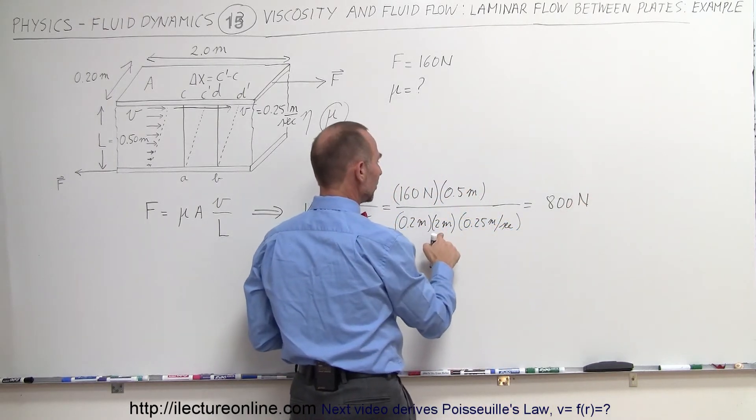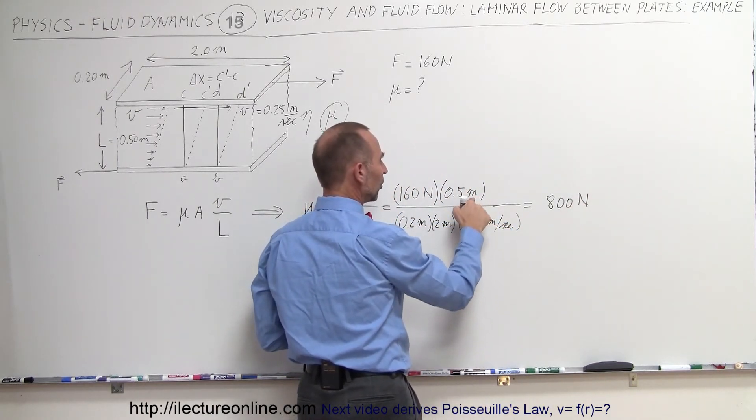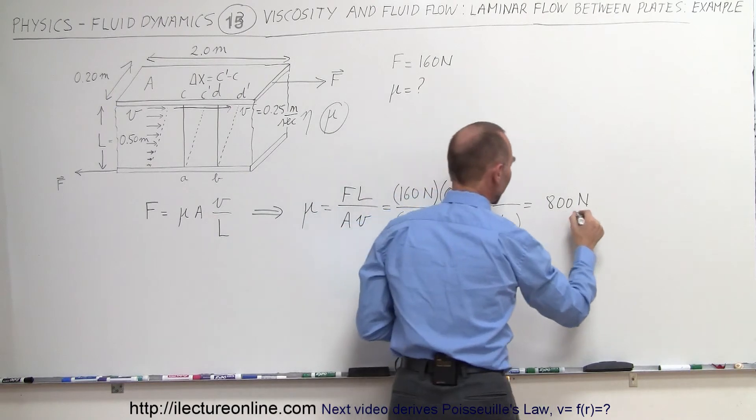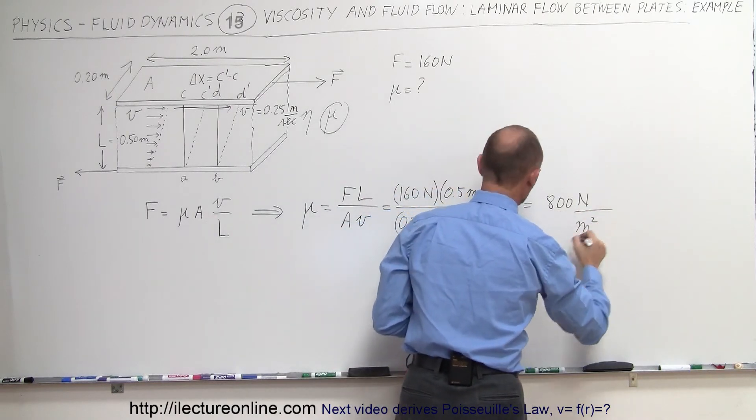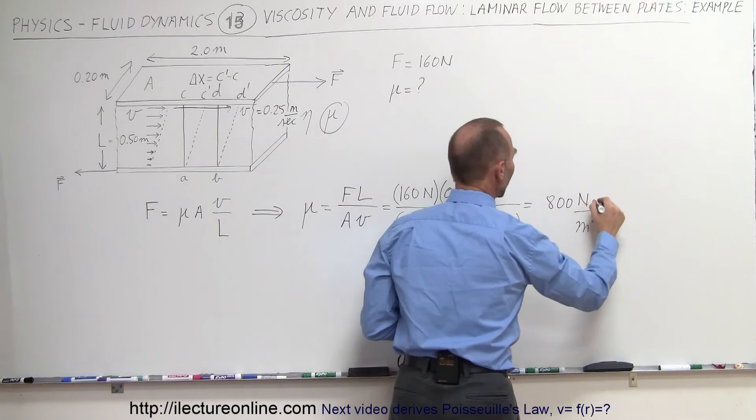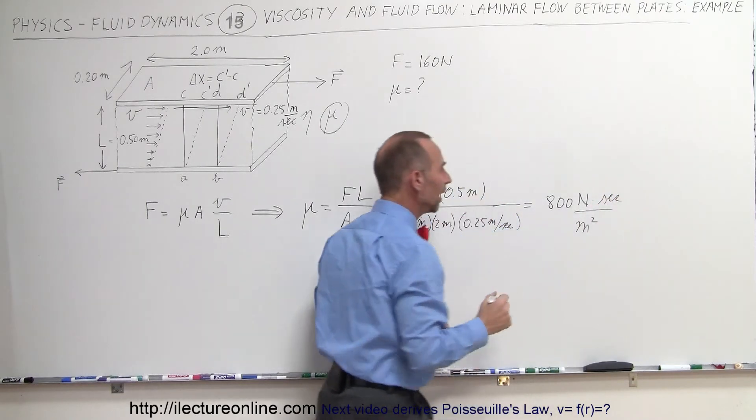We have meters in the numerator and meters squared in the denominator, and 1 over second in the denominator, which becomes times seconds in the numerator. So it would be 800 Newton-seconds per meter squared.